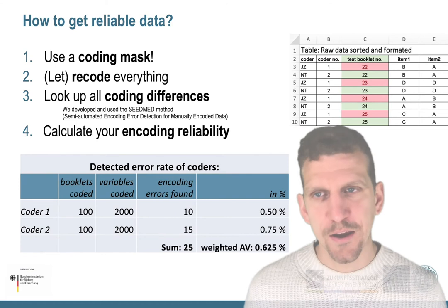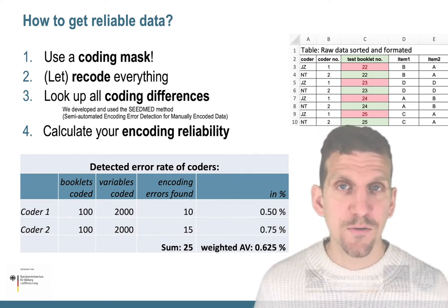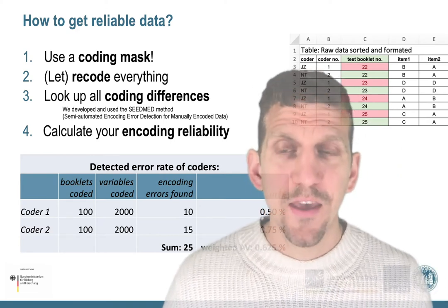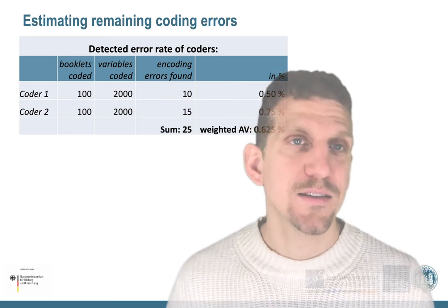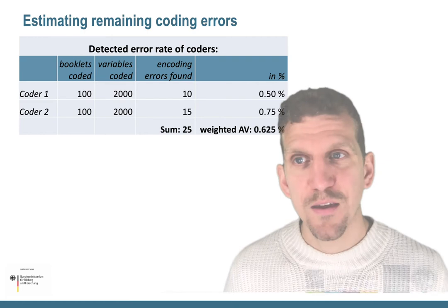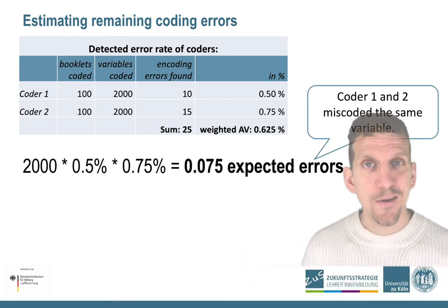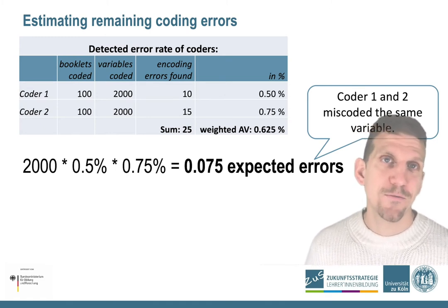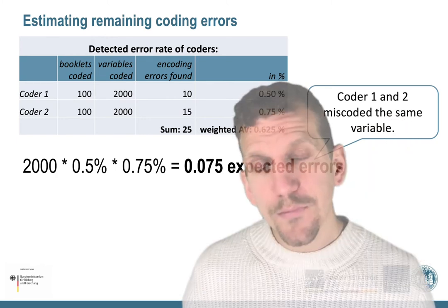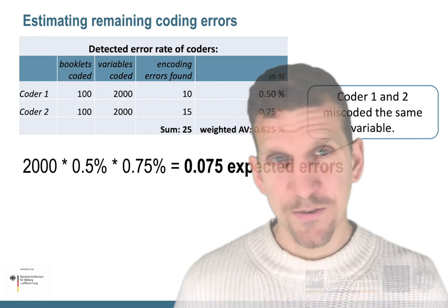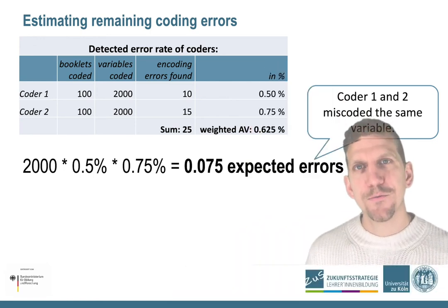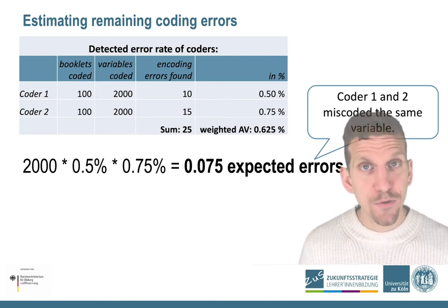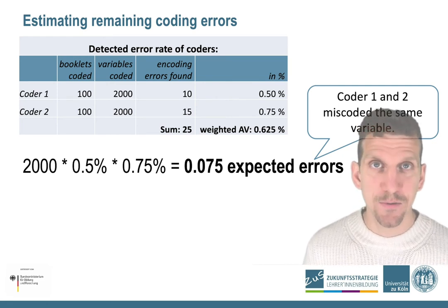Here's how we calculate that — these are actually fairly realistic values: every 200 codings, your brain just makes a mistake. But I was not yet satisfied. I wanted to know how many errors I can still expect in the survey data — that's essentially the probability that both coders make a mistake at the same place. With 2000 coded variables, that results in 0.075 expected errors still remaining undetected. This is the most conservative approach because we didn't yet consider that both coders have to fail in exactly the same way — e.g., miscode A as B — in order to produce an undetectable coding error.